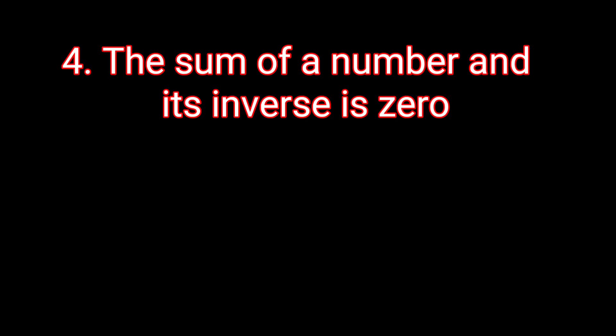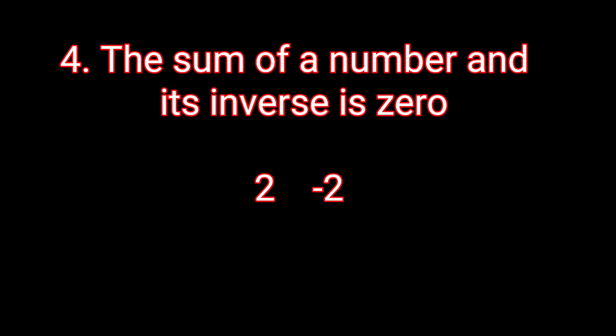The fourth rule is the sum of a number and its inverse is 0. It means that when we have a number and we add it to its inverse, that is the additive inverse, we always get a 0. For example, 2. The additive inverse of 2 is minus 2. So when we do 2 plus minus 2, we get a 0.